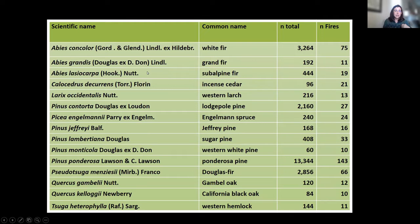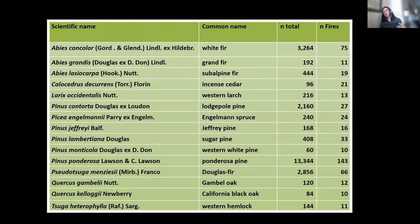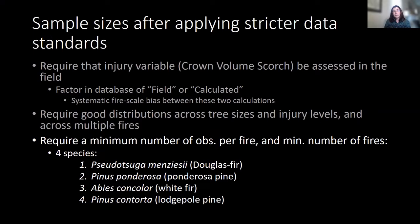The species with sufficient samples across crown volume scorch injury levels, diameter sizes, with at least 10 samples per fire and at least 50 total trees — still dominated by Western conifers — are limited. If we additionally require sufficient samples within each fire and across fires for certain types of modeling, we decrease to four main species: Douglas fir, Ponderosa pine, White fir (Abies concolor), and Pinus contorta, lodgepole pine. You'll see an example of us using those four species for analysis later in this session.